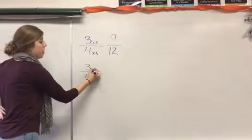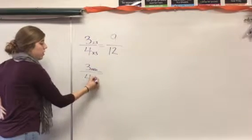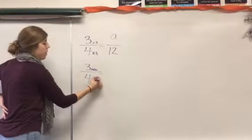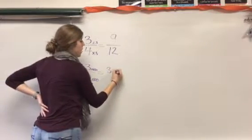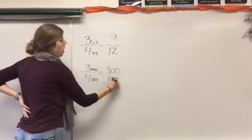I could use a big number, I could use a hundred. If I use it on the top, I have to do it on the bottom. 3 times 100 is 300. 4 times 100 is 400.